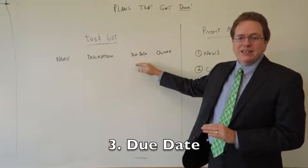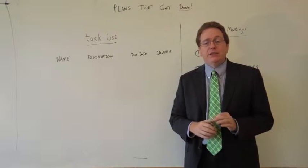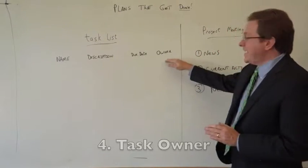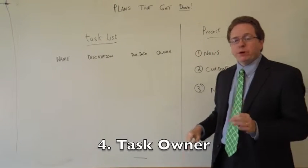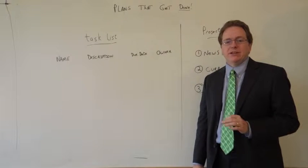Third, due date. This is when the task is forecast to be completed. And finally, task owner. Who is the person who's going to complete the task?